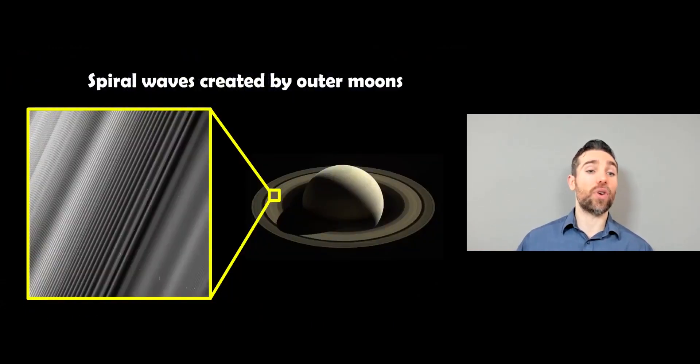So if we have a look a bit closer, we've got things like these spiral density waves. And these particular ones here, when you zoom in, are created by resonances with outside moons. So moons orbiting around the outside of the rings,